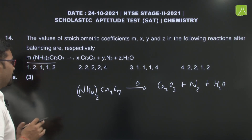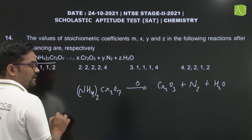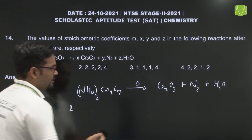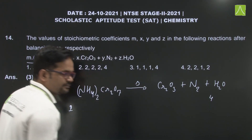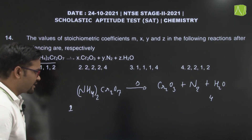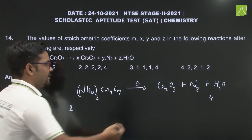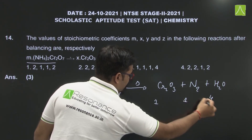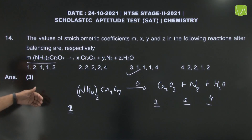You have to balance this equation. अगर (NH4)2Cr2O7 का coefficient 1 consider करते हैं, तो nitrogen के 2 atoms already present हैं। Hydrogen: 2×4=8, so coefficient of H2O will be 4. Chromium: 2 atoms on both sides — already balanced. Oxygen: 3 on Cr2O3 side plus 4 (from H2O) equals 7, which balances. So coefficients are 1, 1, 1, and 4 — which matches the third option. Answer for this question will be third option.